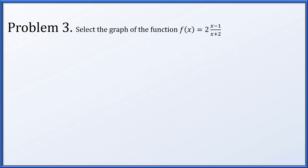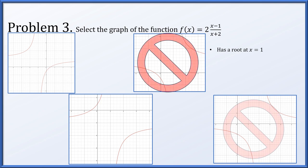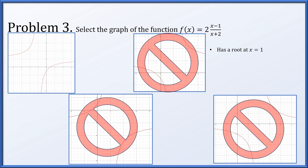In problem 3, we have f(x) = 2(x-1)/(x+2), and we have to determine which graph matches. We're looking for a root at x = 1. Scanning through, it's actually all of them except one, so that information alone really helps us narrow it down. We're looking for a vertical asymptote at x = -2, and that matches. We're also looking for a horizontal asymptote at y = 2. The numerator and denominator both have leading coefficient 1, but it's being multiplied by 2 overall, so the horizontal asymptote at y = 2 still matches the one remaining graph.